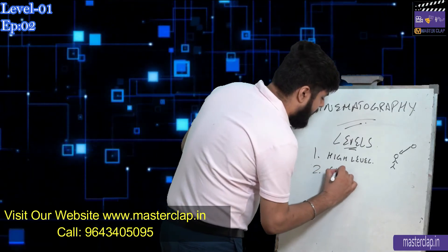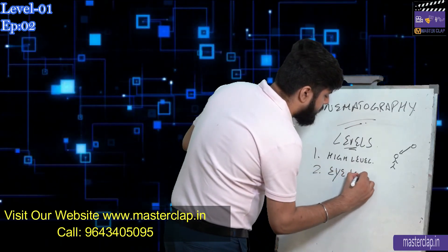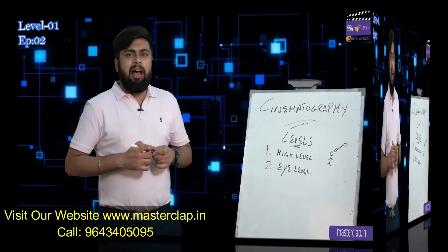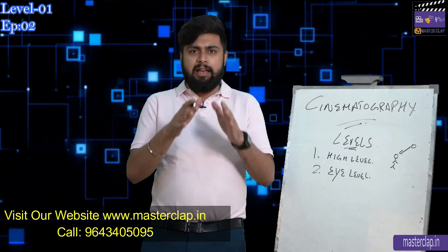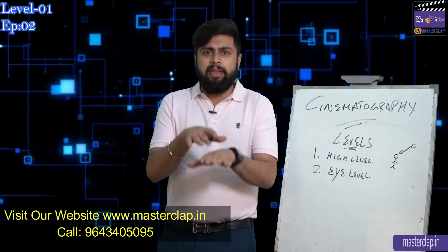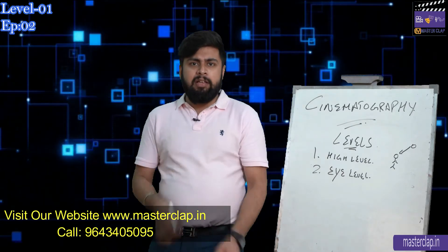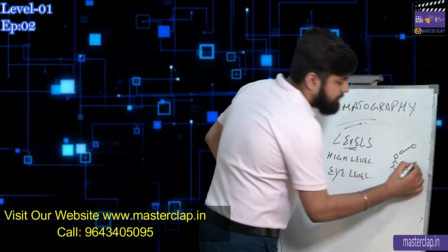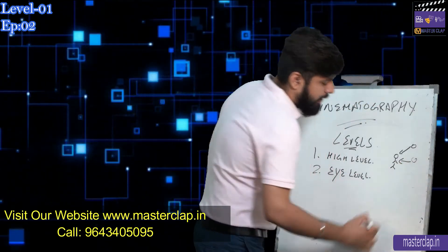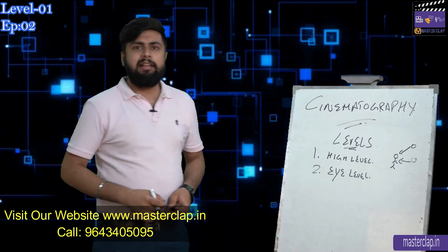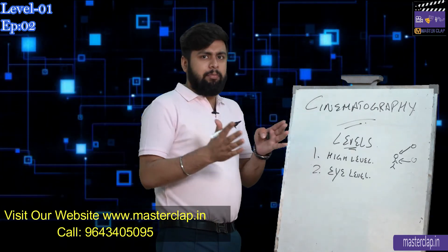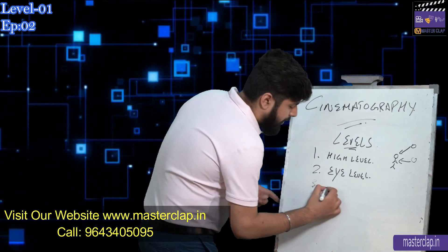The second type is eye level. When we capture at eye level, the camera is kept straight — not up, not down — directly in front of the subject's eyes. When you take a photograph or video at eye level, that's the eye level. This is used for reality — to show things as they naturally are.